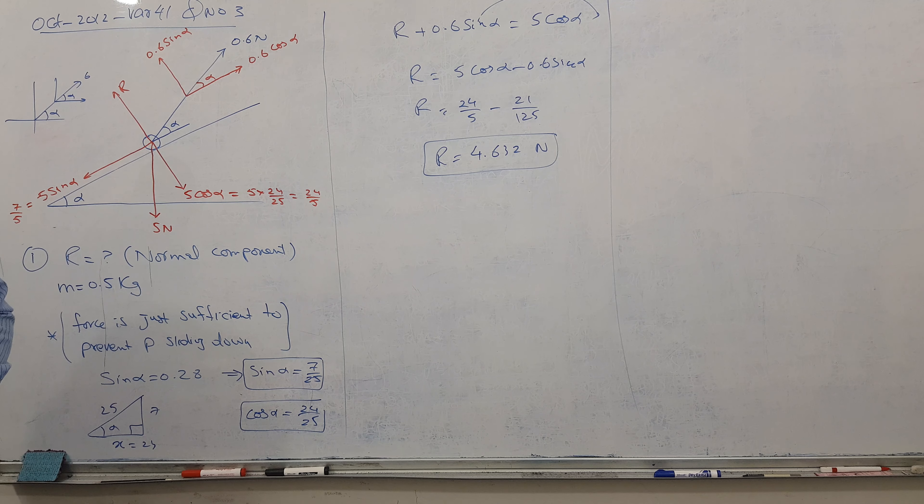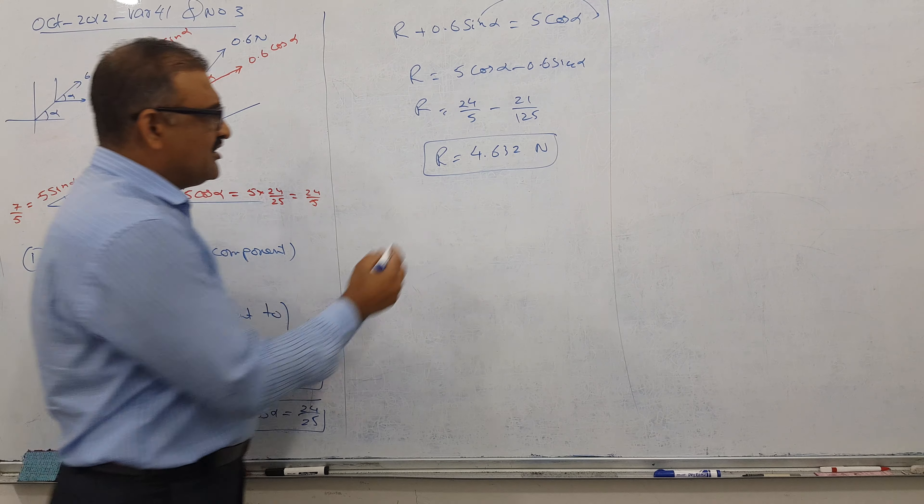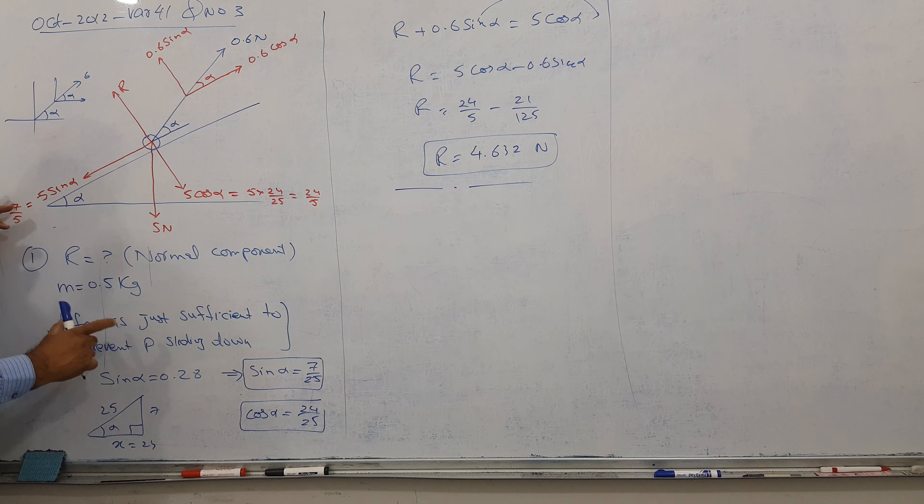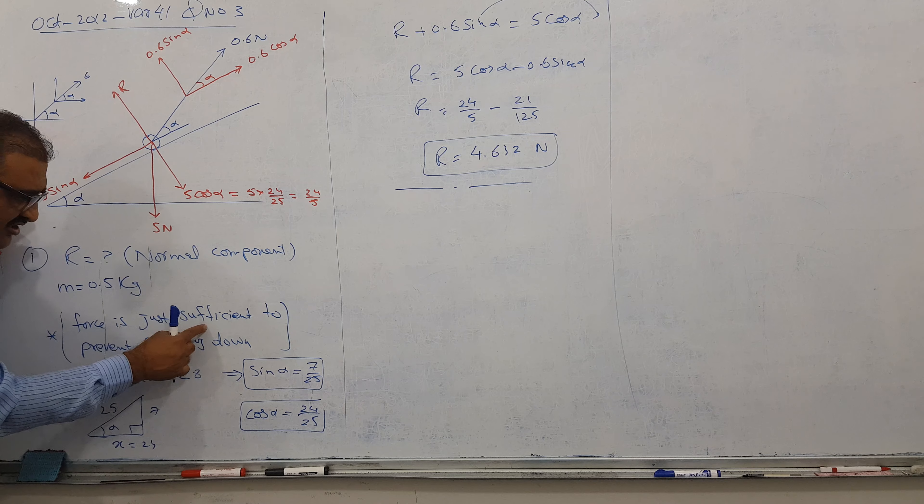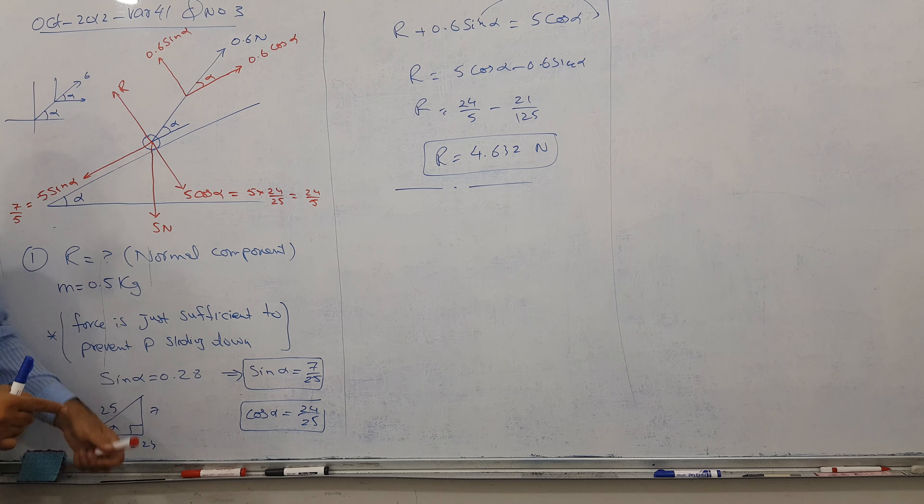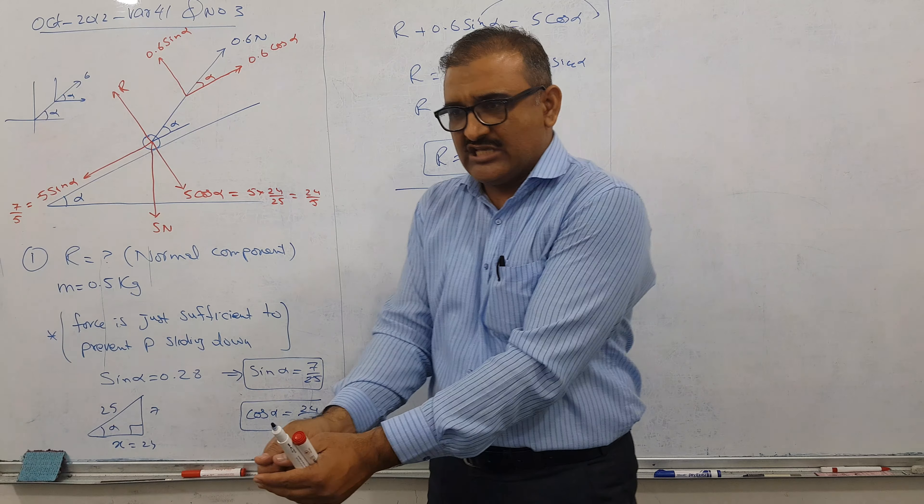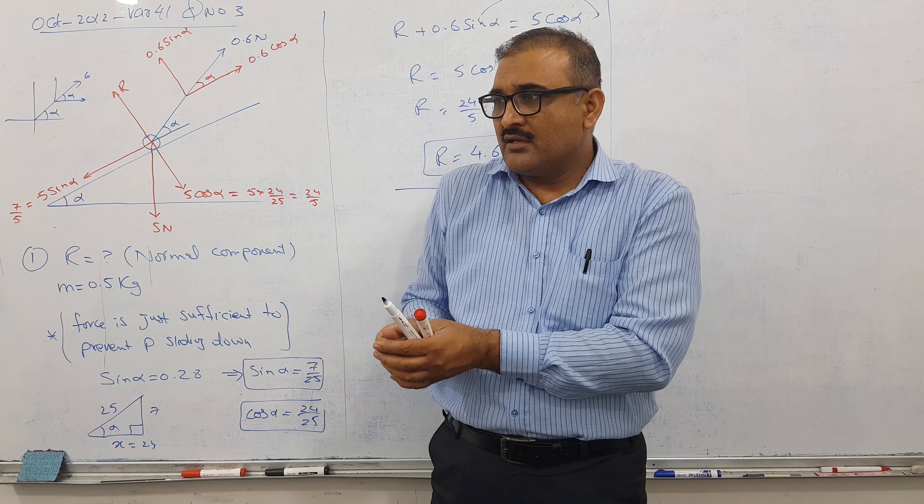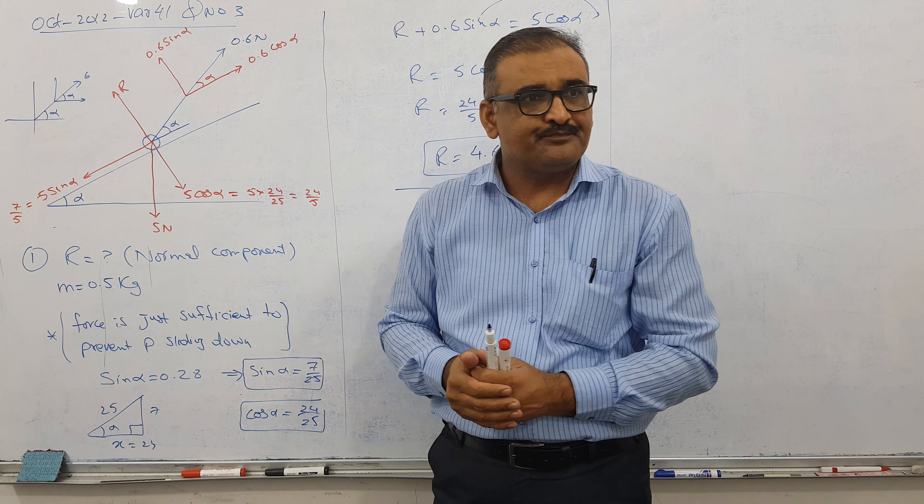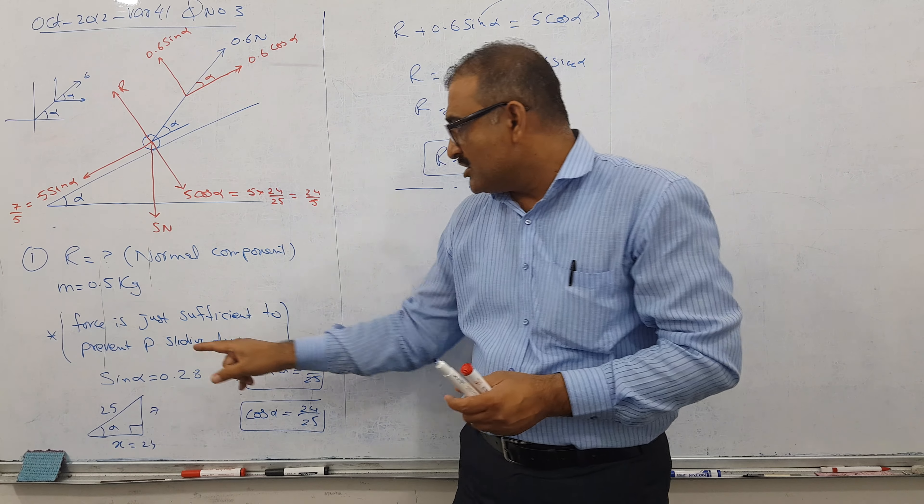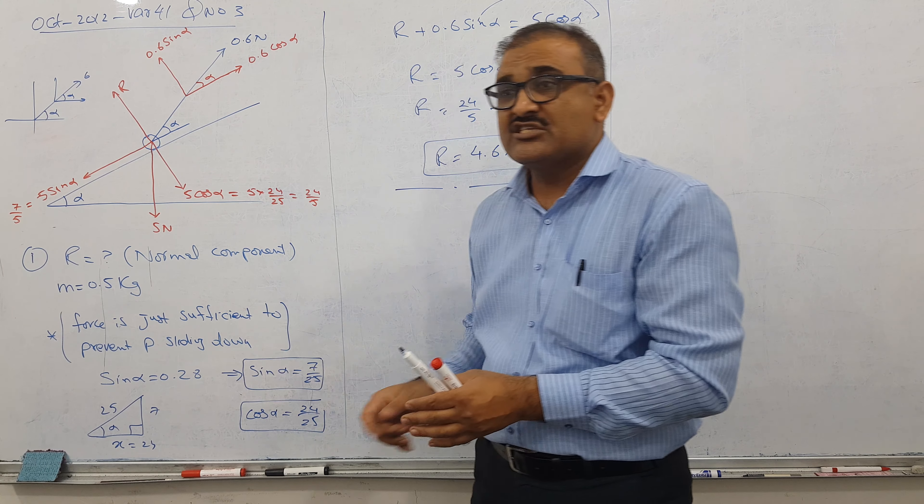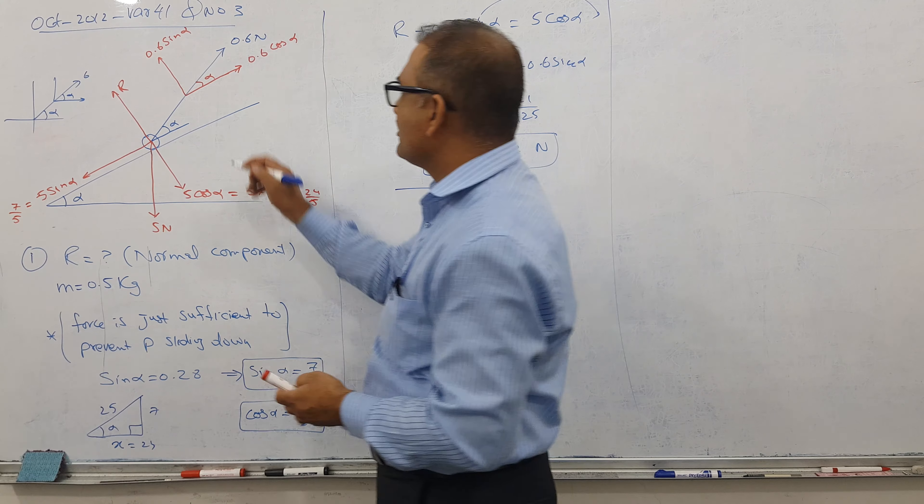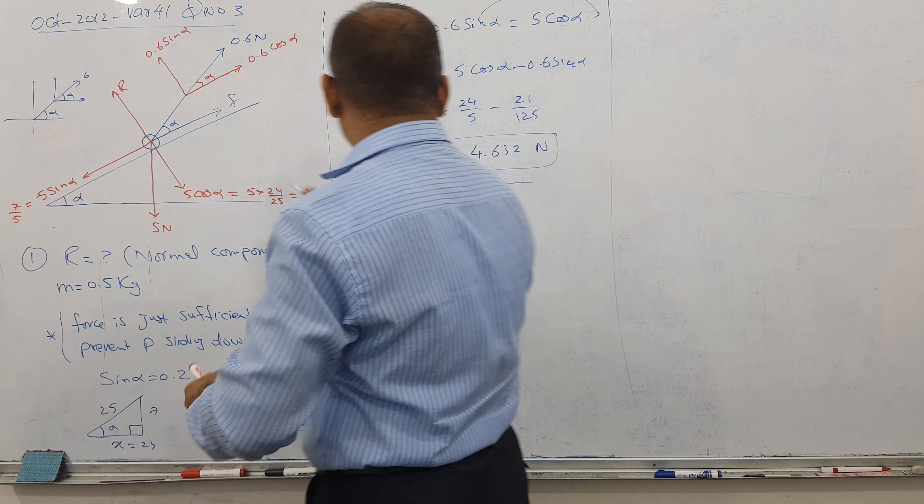Move on, next one, two marks for frictional component. We are going to talk about frictional component. This is a very important sentence you have to understand. Force is just sufficient to prevent the piece sliding down. Can I say the force is pulling up, right? So he is just stopping. Just stopping, it means if I leave it, what will happen? It will move down. So friction is upward.